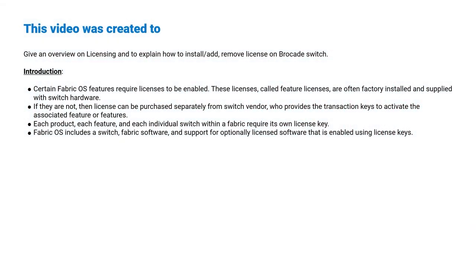This video was created to give an introduction on licensing and to explain how a license is installed and configured on a Brocade Switch. Certain FabricOS features require licenses to be enabled and are often factory installed and supplied with switch hardware. FabricOS includes a Switch Fabric software and support for optionally licensed software that is enabled using license keys.